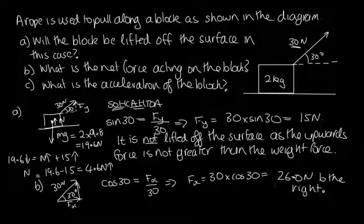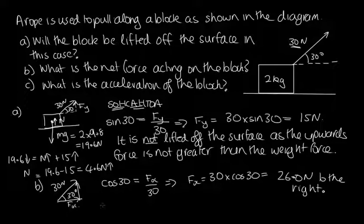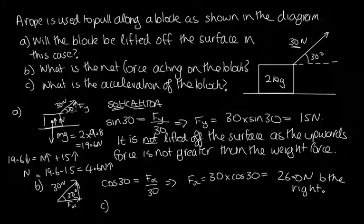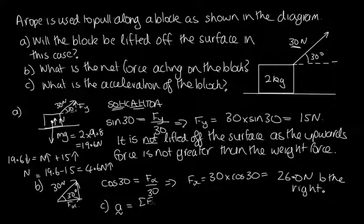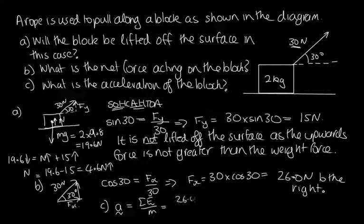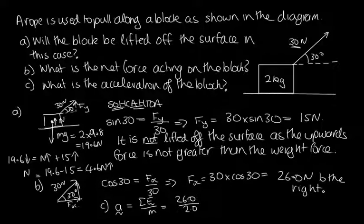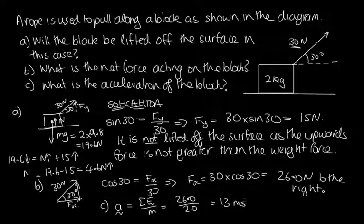Since force is a vector, we give its direction. For Part C, the acceleration of the block is found using Newton's second law: acceleration equals net force divided by mass = 26.0 / 2 = 13 meters per second squared, directed to the right.